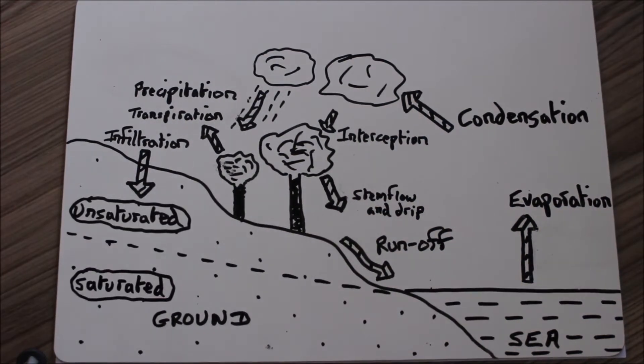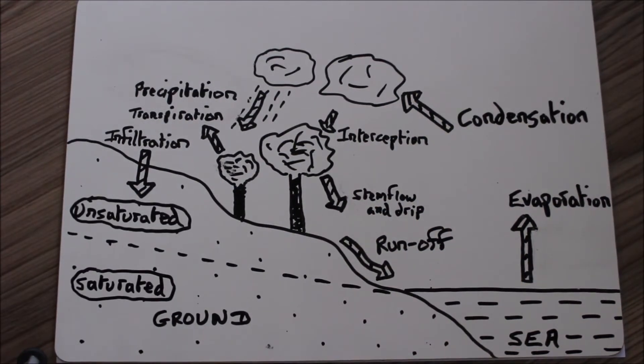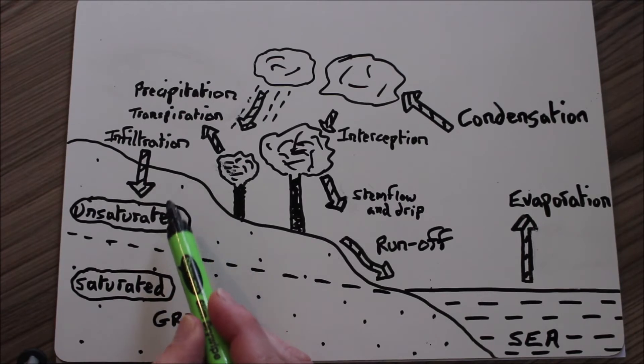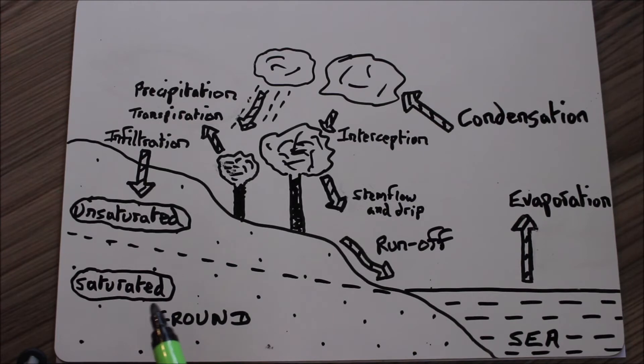We're going to concentrate now on what happens underneath the ground. Underneath the ground, the top layer of soil is unsaturated usually. This means it is generally dry and water just travels through it. Whereas the saturated layer of ground means it's absolutely soaking wet. It can't absorb any more water because it's got so much in it. Unsaturated, saturated.